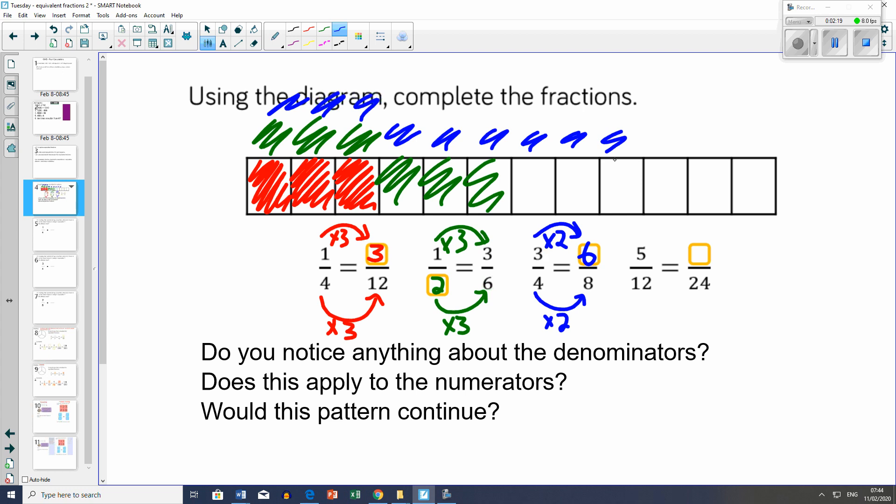Finally, 5 twelfths is something over 24. What did I do here? Multiplied by 2, so I do the same here. It's 10 twenty-fourths. So I could shade 5 pieces: 1, 2, 3, 4, 5. So there's a number of different ways you can use the same diagram to look at equivalent fractions.